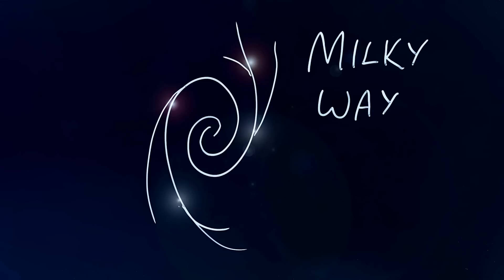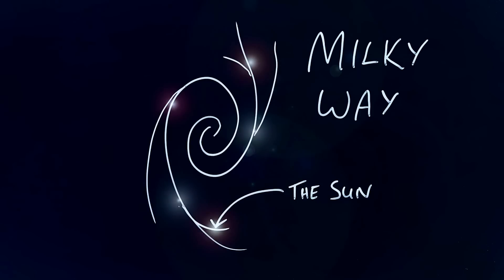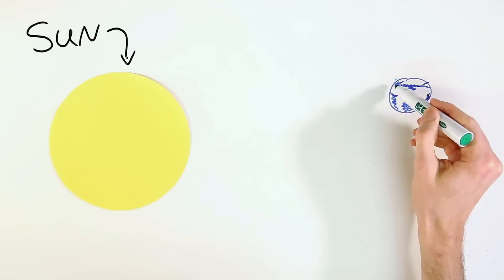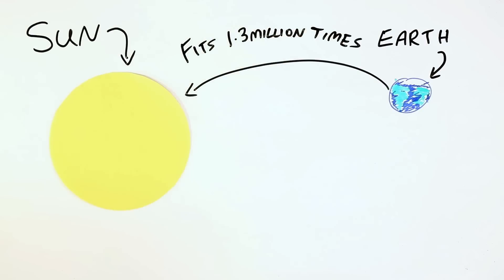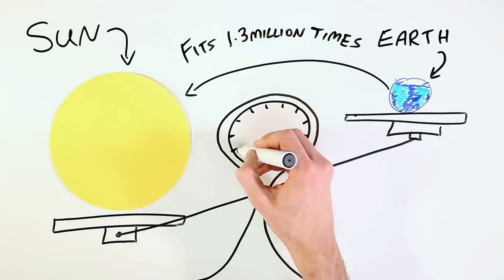Our star is called the Sun. Within the Milky Way, the Sun is a tiny speck of light, but compared to the things around us, the Sun is huge. It could fit 1.3 million Earths inside it, and it has a mass over 300,000 times greater than that of the Earth.